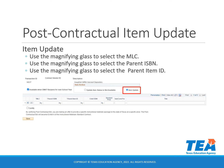You will use the item update option in the action item box to lower the price of a program or a component, to reduce the number of subscription years for a program or a component, or to change the title of a program or a component from a specific number of years to the through school year format. You will select the MLC using the magnifying glass, then select the parent or program ISBN by clicking on the magnifying glass.